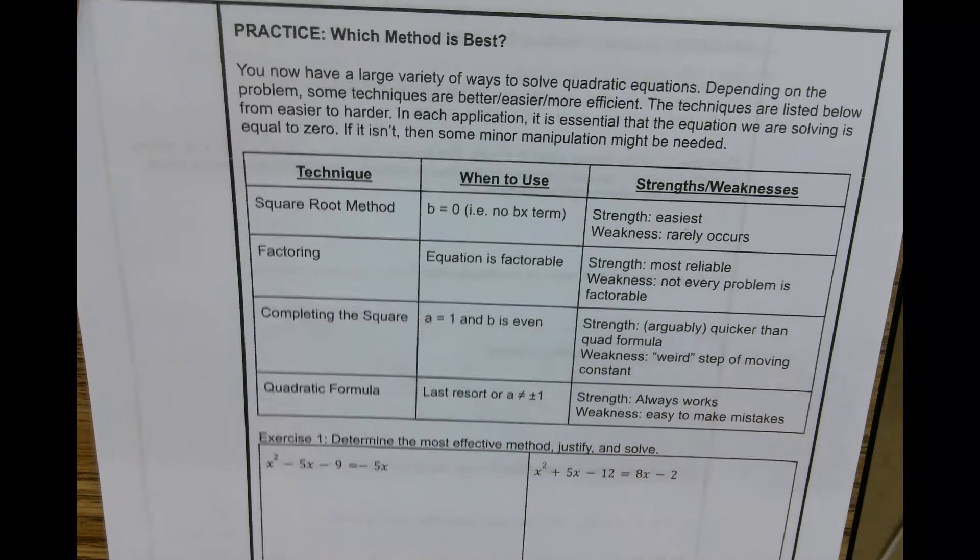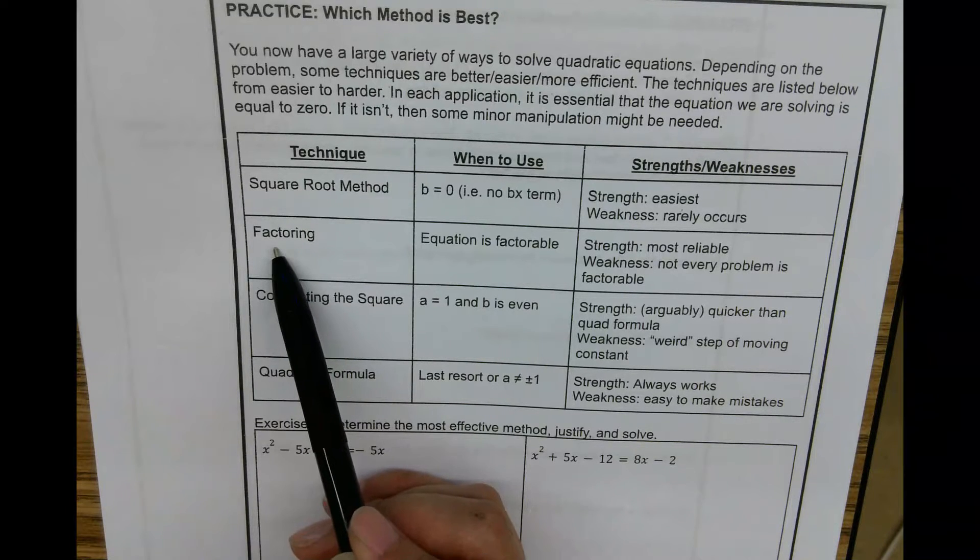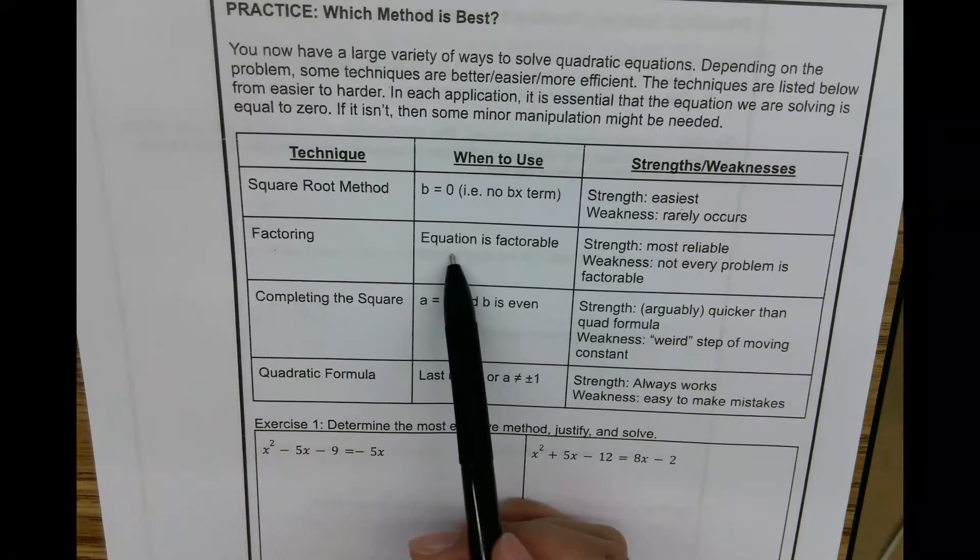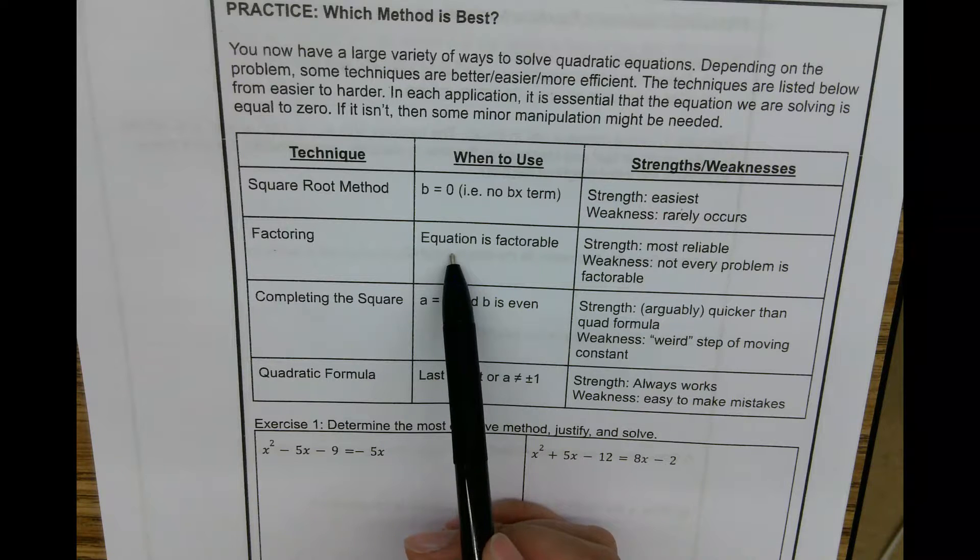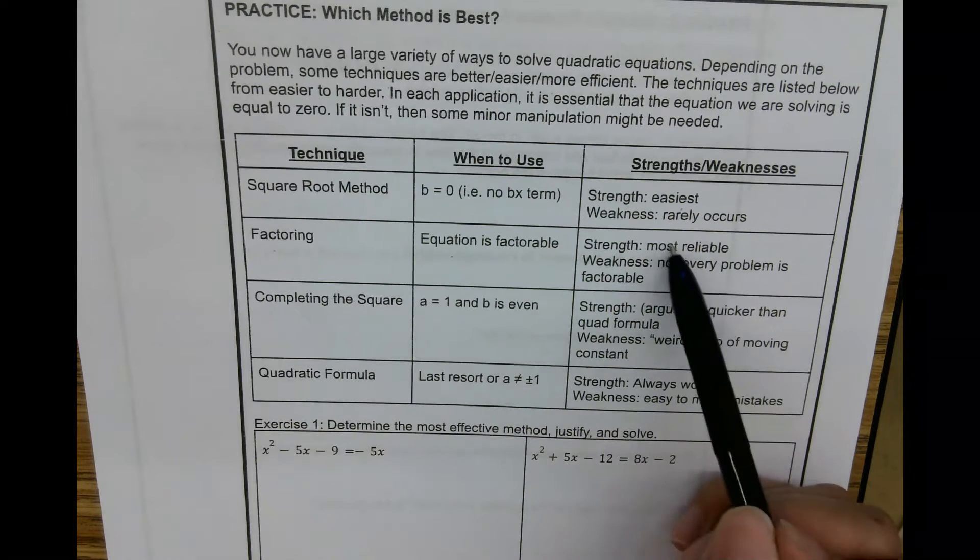And then the second method is factoring. This is the first one we actually learned. When would we use this? When the equation is factorable. For those of us who are quick at factoring, factoring is one of the best methods, fastest methods we could use. It's probably the most reliable, provided that you could factor.